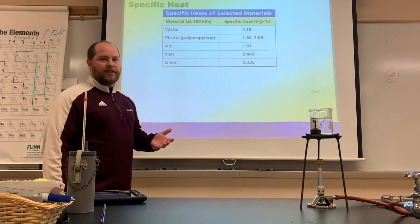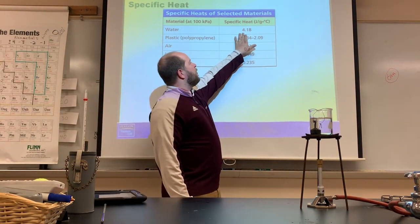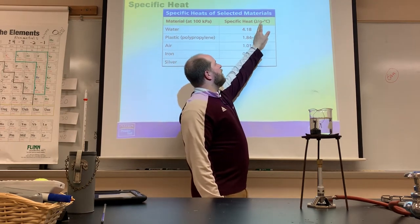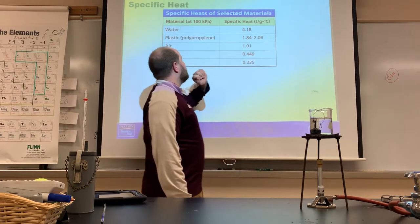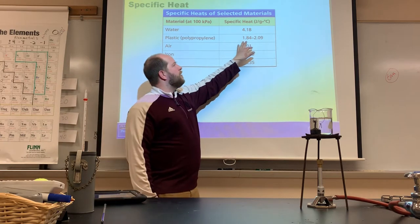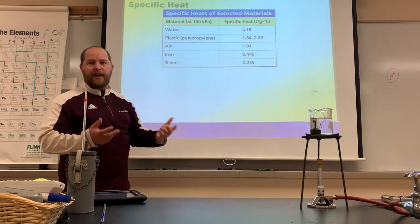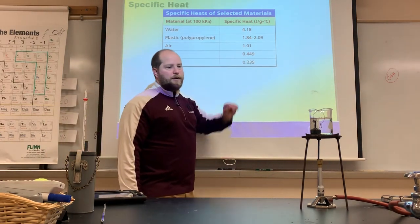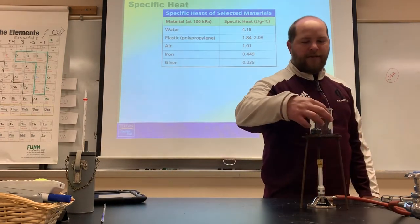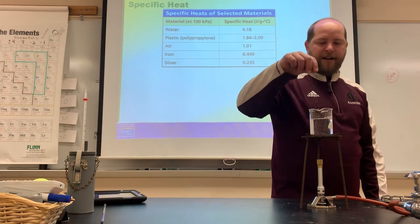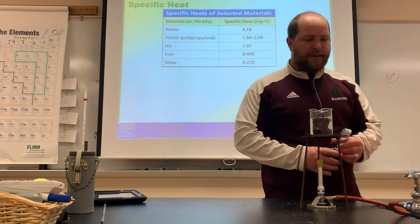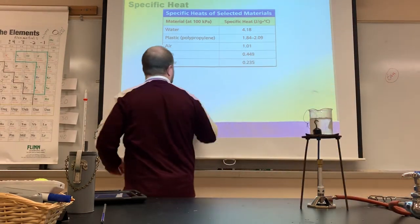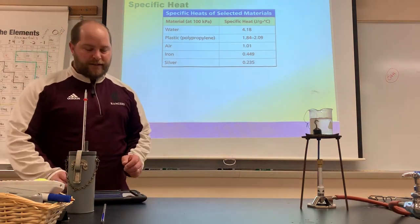Water has an unusually high specific heat: 4.18 joules per gram per degree Celsius. Plastics are around 2, air is about 1, iron is about 0.449, and silver is 0.235. The lower the specific heat, the more its temperature rises when a given amount of energy is absorbed.